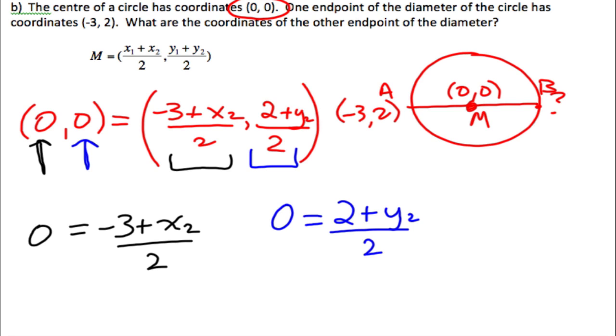Multiply both sides by 2 because we don't want the 2. It's dividing. So we're going to multiply both sides by 2. So 0. And then we're going to solve for X2. So we're going to have to add 3.